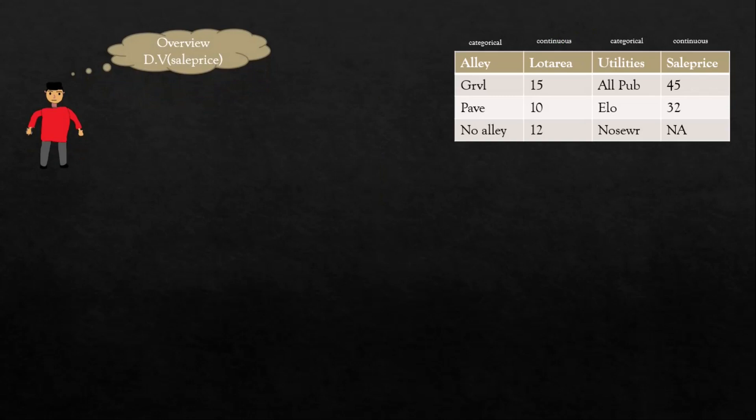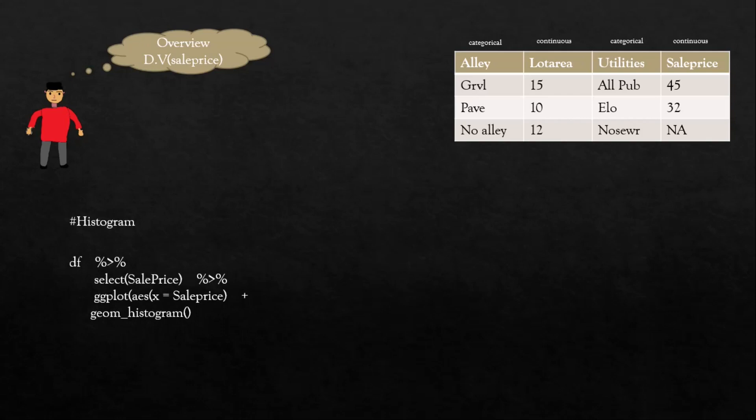This is the Kaggle housing dataset. The task is to predict the sale price — it is a regression problem, and this dataset is available on the Kaggle website. First, we want to look at the dependent variable and understand its distribution.